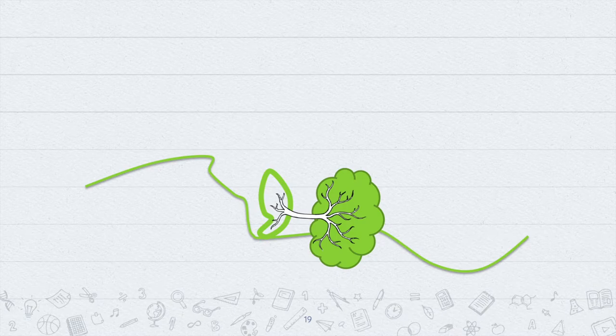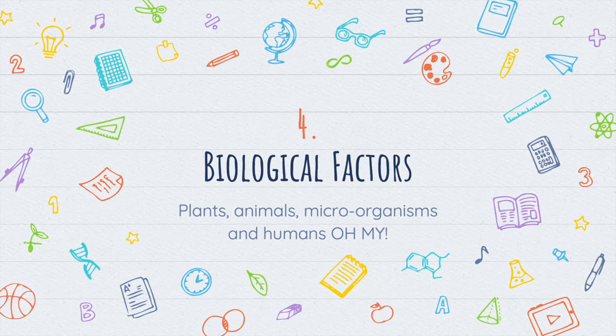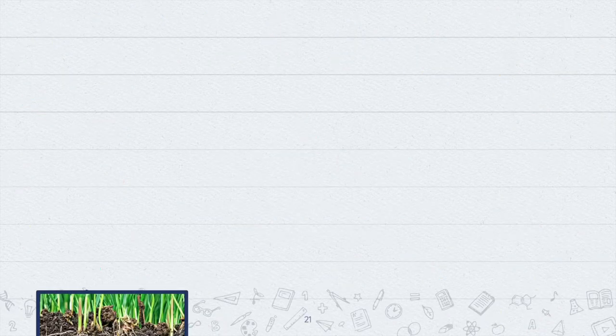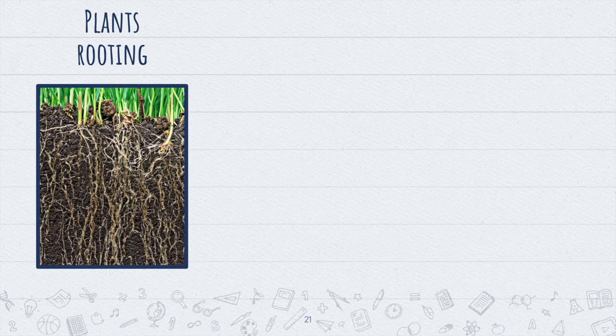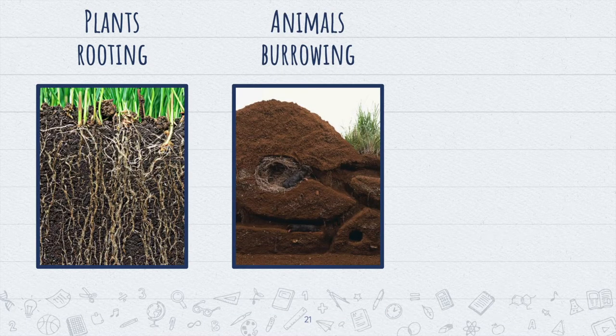The falling of the cliff is not just because of the slope — the tree also had a role. This leads into the next soil forming factor: biological. Biological factors include anything that's alive and has an influence on soil formation. For instance, it could be the roots of a plant growing and carving paths for water and air to move in. It could be animals burrowing dens or adding nutrients from their excrements.